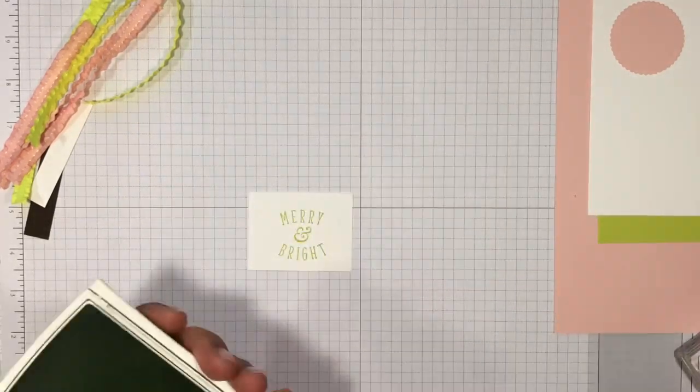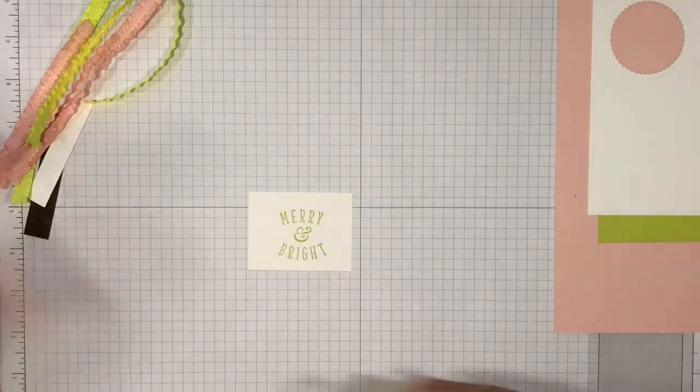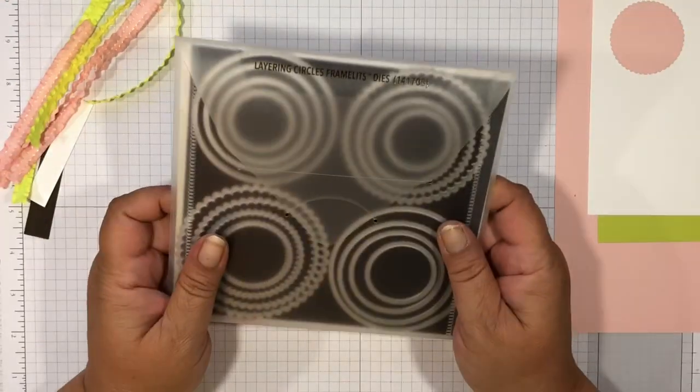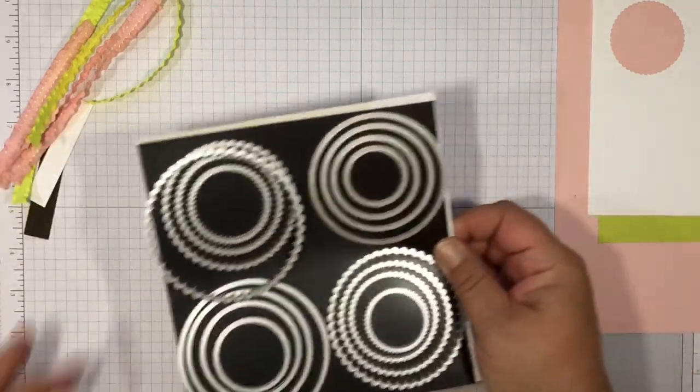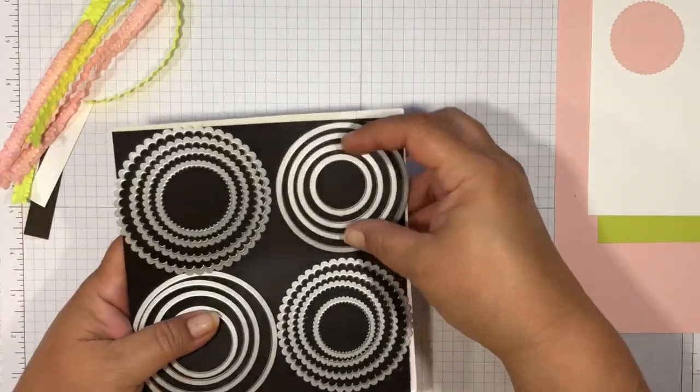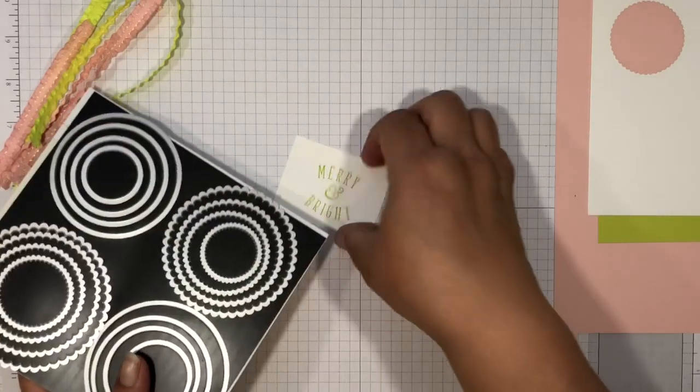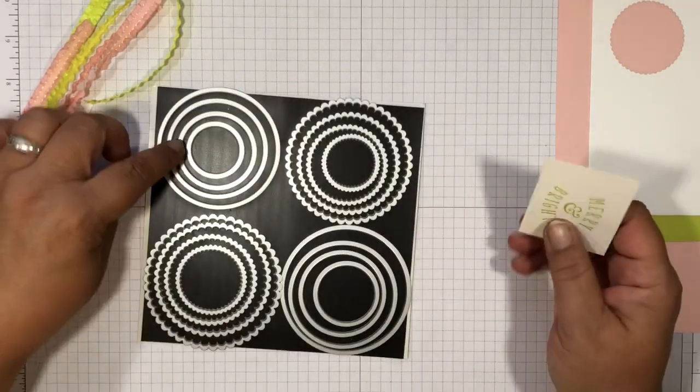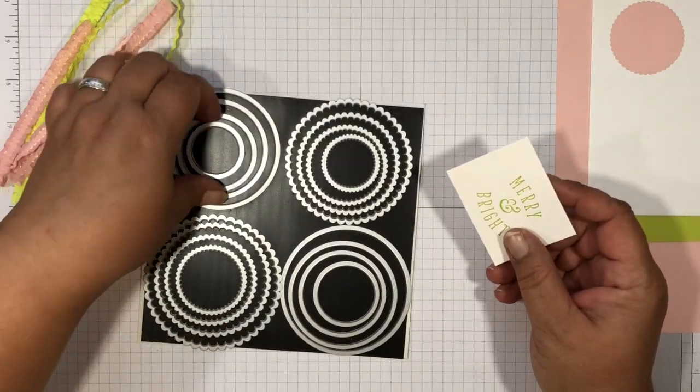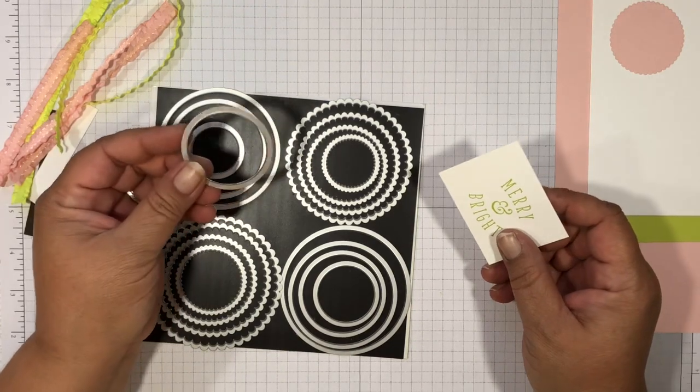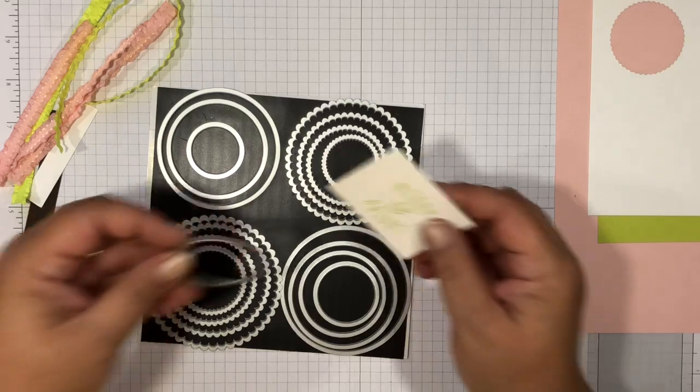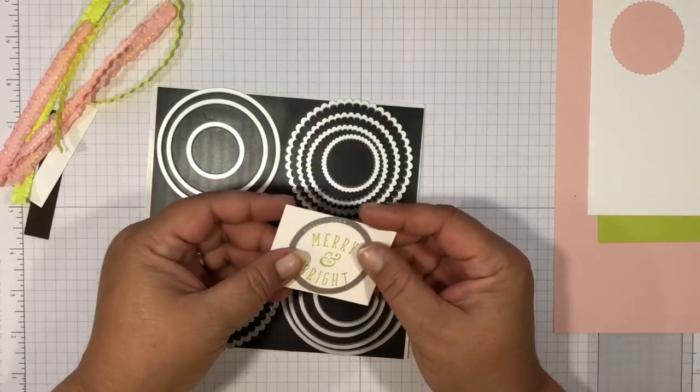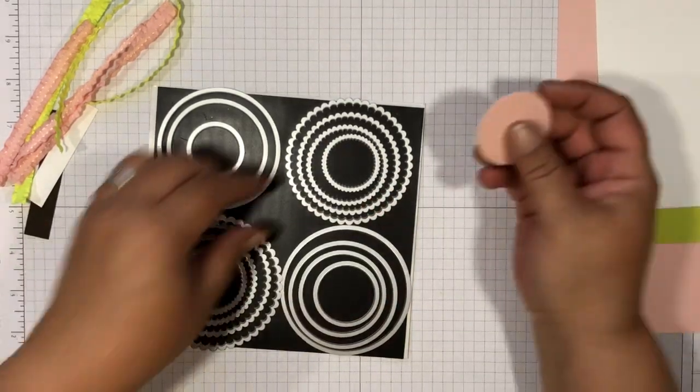We're going to use our Layering Circle Framelits to die-cut this. I used this one right here and it would be I think like the one and seven eighths by one and seven eighths is what I measured it with using my grid pad.